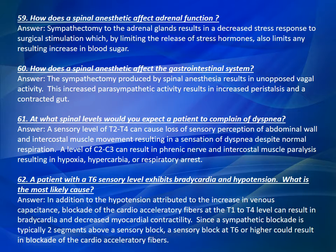Question 60: How does the spinal anesthetic affect the gastrointestinal system? The sympathectomy produced by spinal anesthesia results in unopposed vagal activity. This increased parasympathetic activity results in increased peristalsis and a contracted gut.